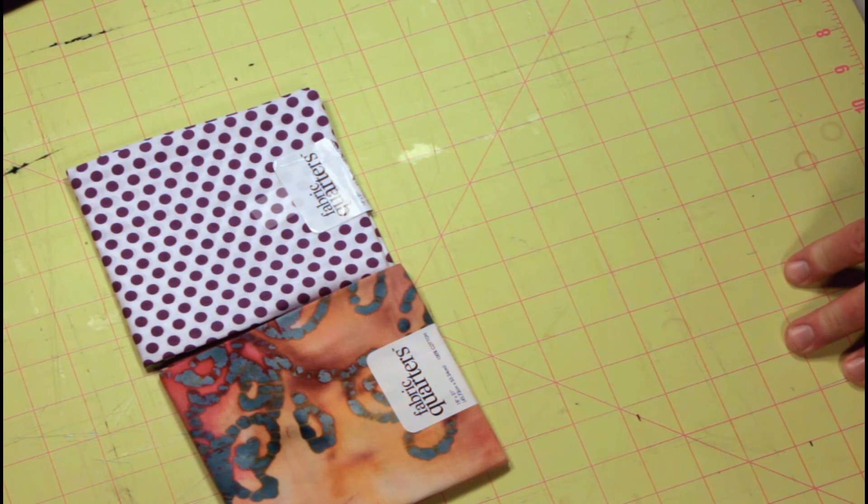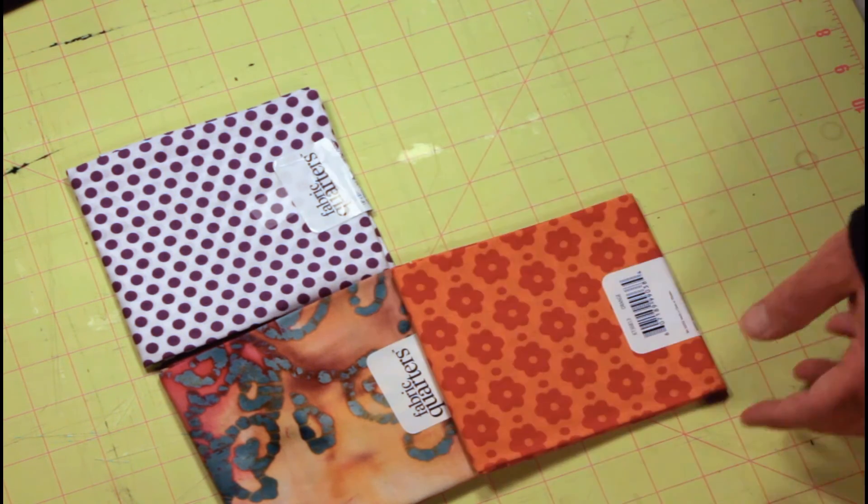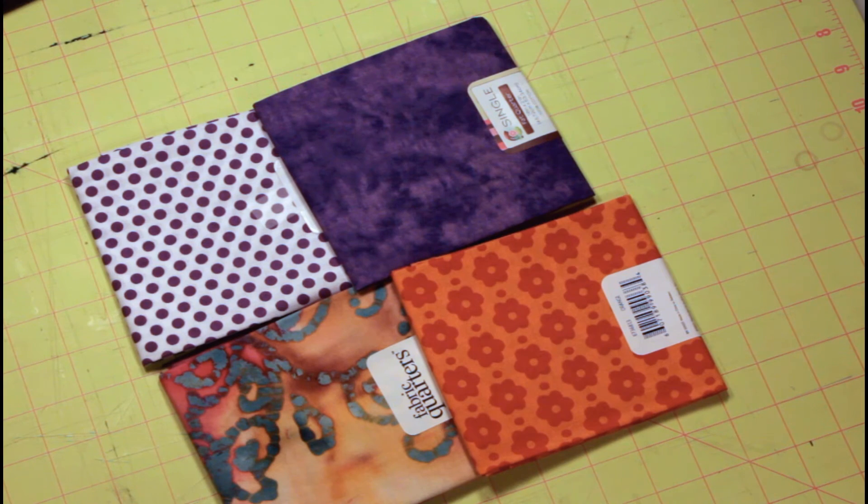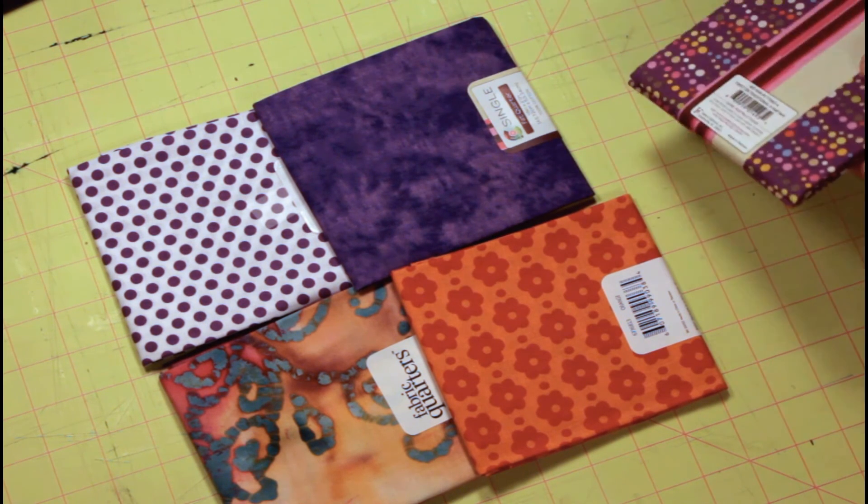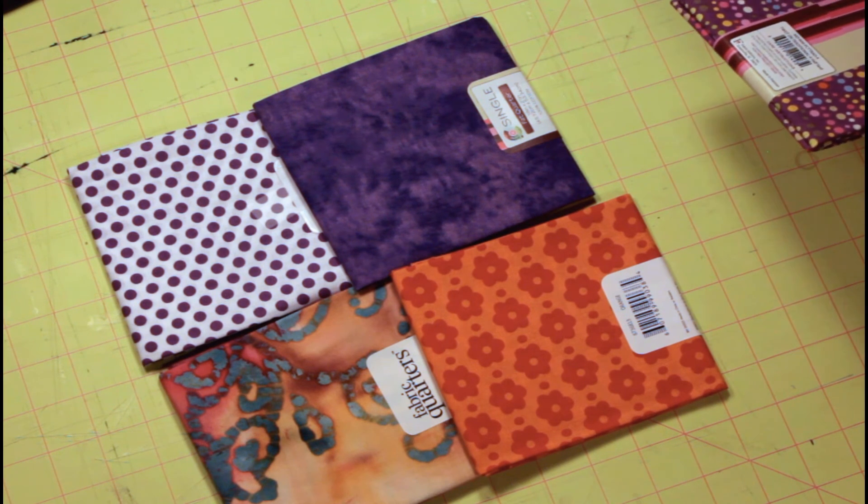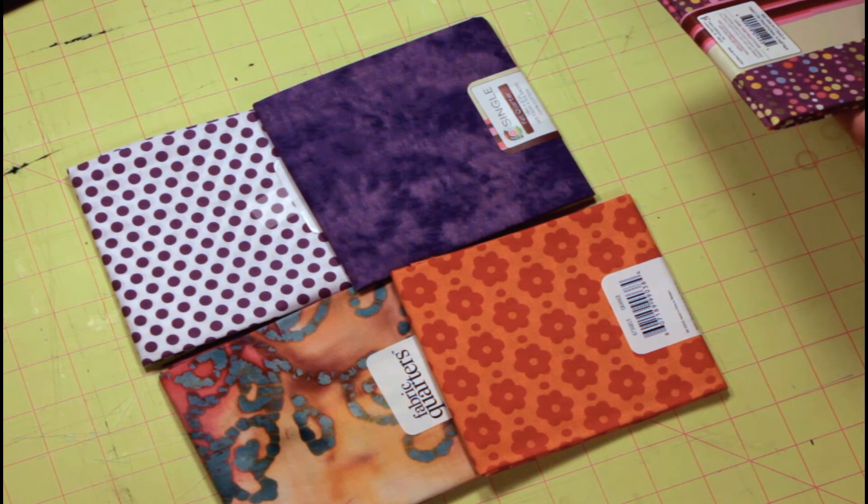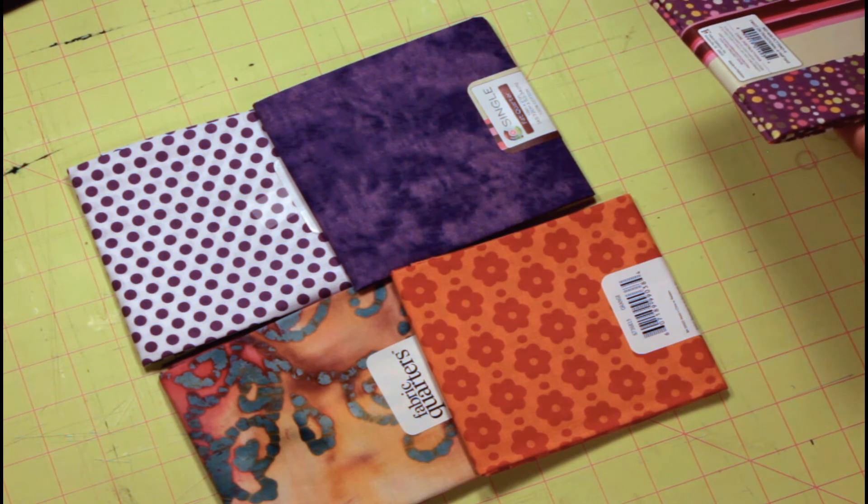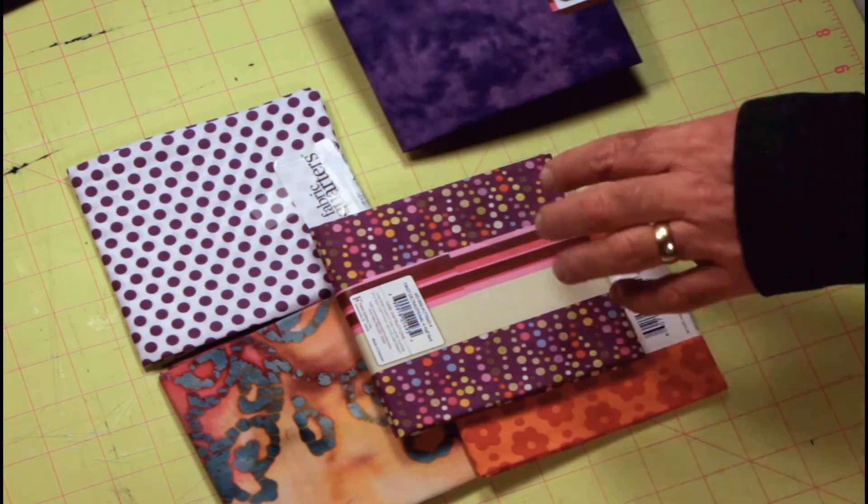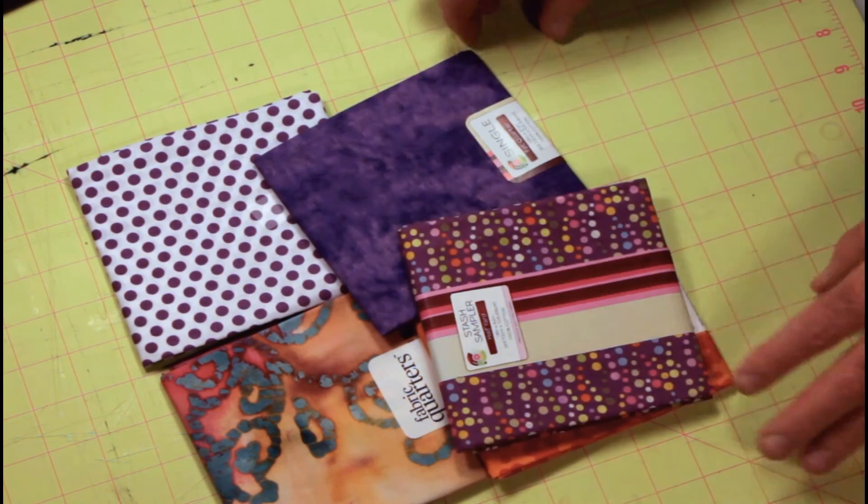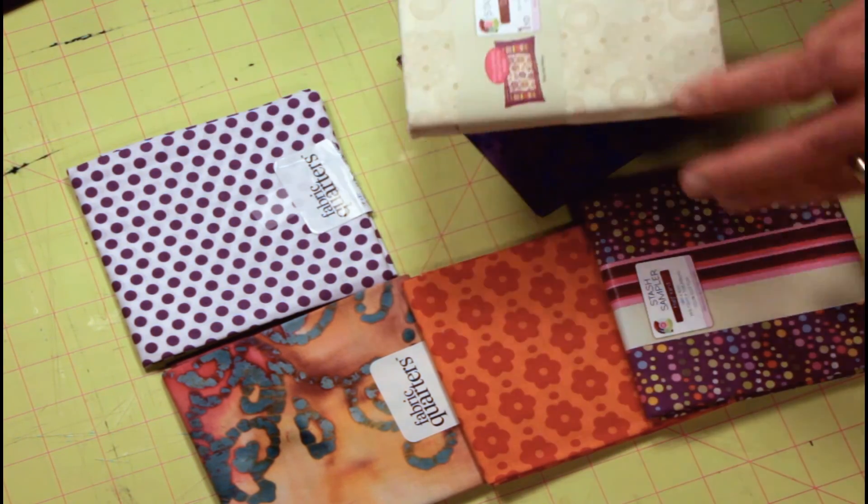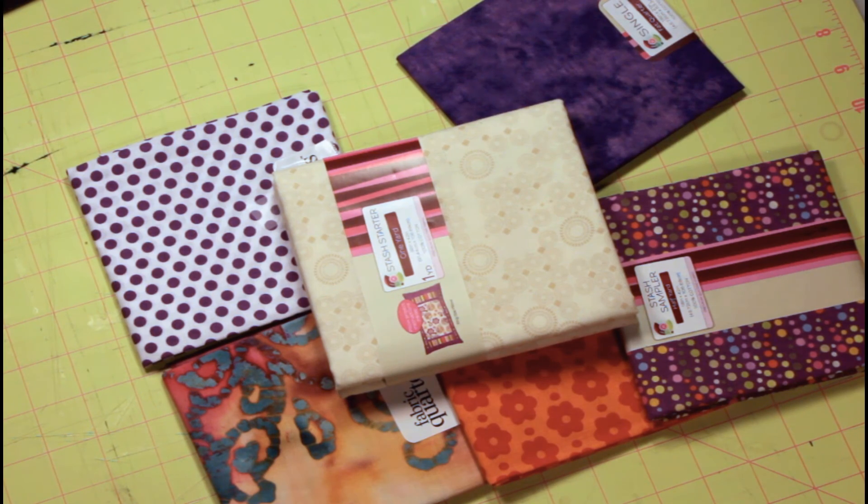The easiest thing to start with is going to be fat quarters. So you can get these at Joanne, they carry them in their quilting section, Hancock's, some of the Walmart stores that have fabric carry these also. And these are just the right size to work on these. So just try to find a complementary color for what you're going to be doing. And let's see what I've got left in my stash here. I thought I had some solids. I don't really, but you could use - this is the next tier here. That is the lining, for example.